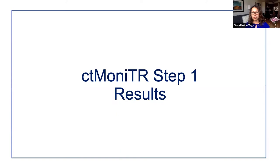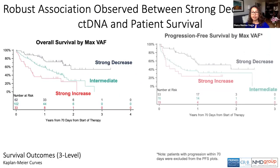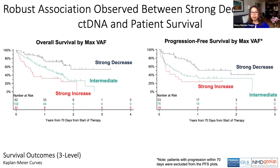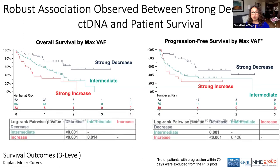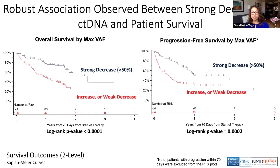Now we will move on to some of the highlights from the project results. We observed strong associations with overall survival on the left and progression-free survival on the right for the three-level CT-DNA metric. The strength of association across levels was quite pronounced with a clear gradient. Patients who had a strong decrease in max VAF, the dark blue curve, were associated with the best survival. Patients who had a strong increase in CT-DNA, the red curve, had the worst survival, and patients in the intermediate category, the green curve, were somewhere in between. All but one of the pairwise p-values comparing the individual curves were significant. Similarly, strong findings were seen in the two-level CT-DNA metric where patients who had a strong decrease in CT-DNA had better OS and PFS.